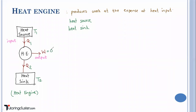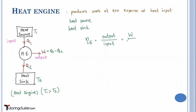W is equal to Q1 minus Q2. Heat flows from higher temperature to lower temperature, so T1 is always greater than T2. Now let us define efficiency of an engine. Efficiency is nothing but output from the system divided by input to the system. The output is W and the input is Q1, so efficiency equals W divided by Q1.